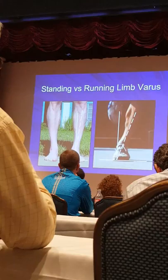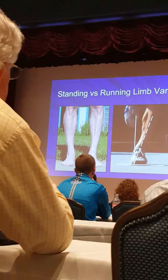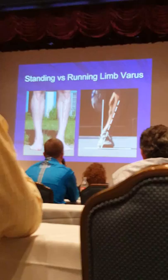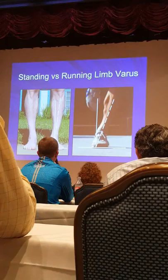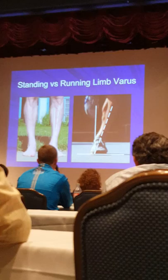Running on varus doesn't really occur when you're jogging at a four or five mile per hour pace. Here are photos showing legs standing versus running at about a five-minute mile pace — you can see almost a 15-degree change in the angle of the tibia. That shows the running on varus that occurs. As we go faster and faster in running, we bring the feet under the body more, which increases the varus attitude.